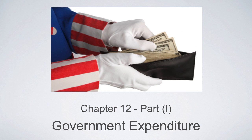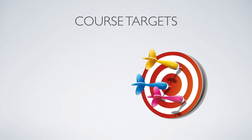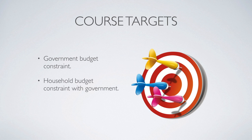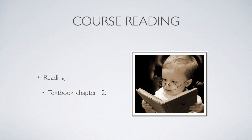Hello everyone. Today we are going to learn another new topic, which is government expenditure. For part one, we are going to learn government budget constraint, and we are going to modify household budget constraint with the presence of government, and finally we are going to learn the impact of government's existence on household income. For this part, you need to read chapter 12 from our textbook.